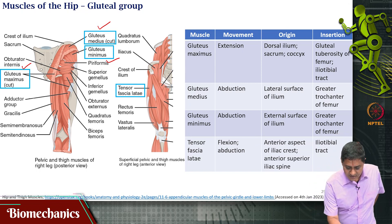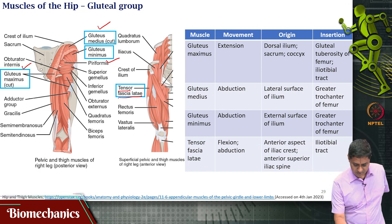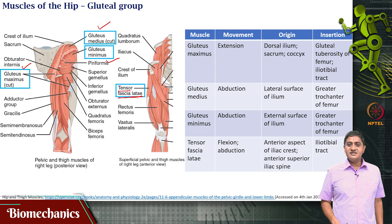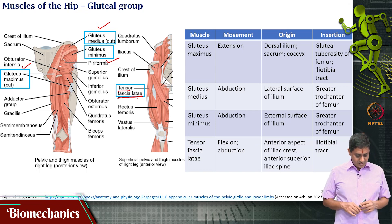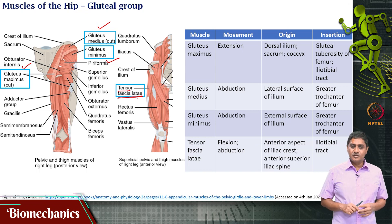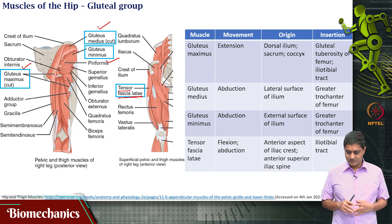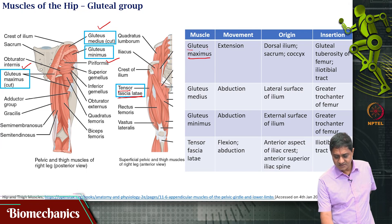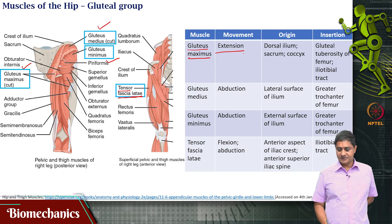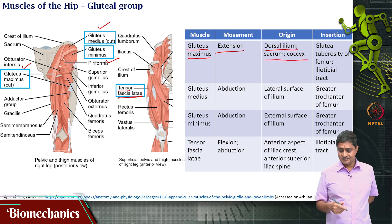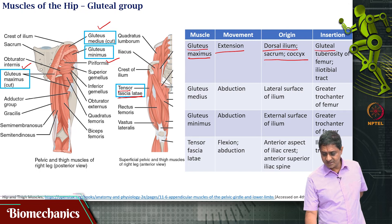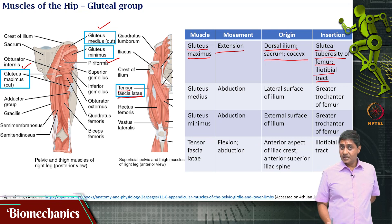There is one more muscle which is the tensor fasciae latae — a more square-like muscle found on the lateral side of the thigh. It is a synergist to the glutes and the iliopsoas, and its function is flexion and abduction of the thigh. Gluteus maximus has the function of extension of the thigh; its origin is in the dorsal ilium, sacrum, and coccyx, and its insertion is on the gluteal tuberosity of the femur and the iliotibial tract — a relatively large muscle.